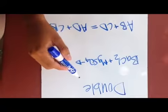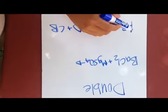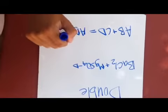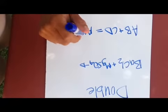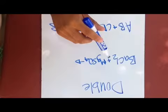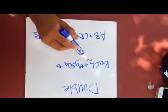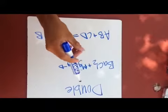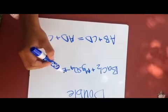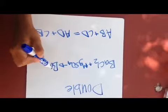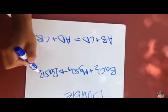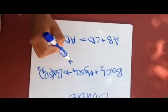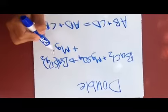Now we have double replacement. With double replacement, you have AB plus CD equals AD plus CB. And like single replacement, you can only swap the positives with positives and the negatives with negatives. So your product is going to be BaSO4²⁻ plus MgCl2.